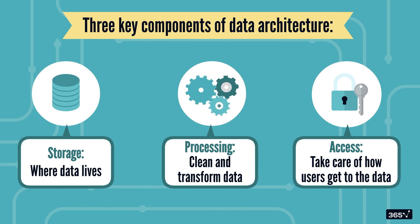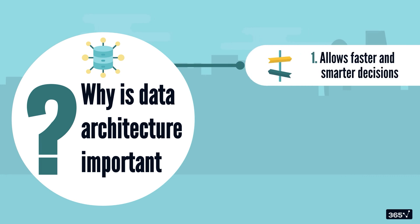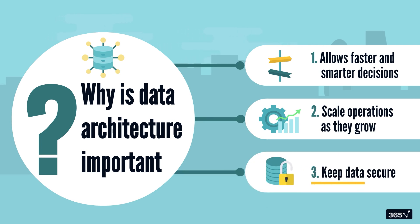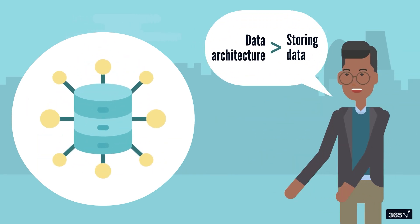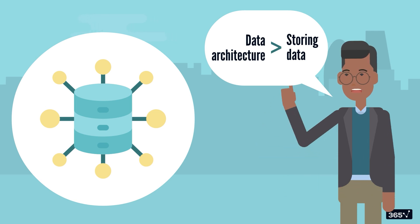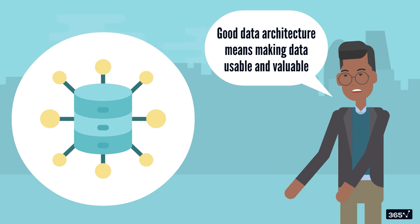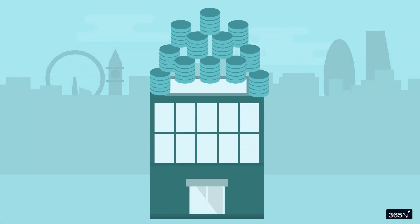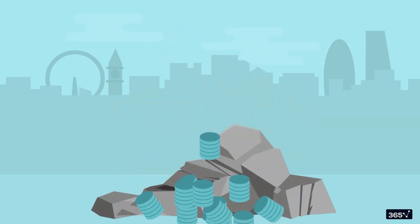Let's understand why data architecture is important. Organizations rely on it to make faster, smarter decisions, saving time. They use it to scale operations as they grow and ensure optimal use of resources. Most importantly, it keeps data secure and compliant with regulations. As the amount of data we collect increases every second, it's crucial to have the right boundaries and controls so data doesn't end up in the wrong hands. Good data architecture isn't just about storing data — it's about making it usable and valuable.